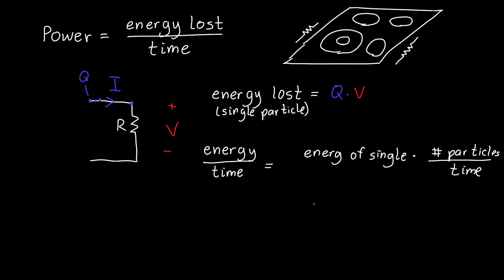And so if we just plug stuff in, we've got Q times V times the number of particles per unit time multiplied by the charge of each particle, so all of this is just equal to the current. And so the power lost in a resistor, but really any element, is equal to the voltage across that element times the current passing through it.